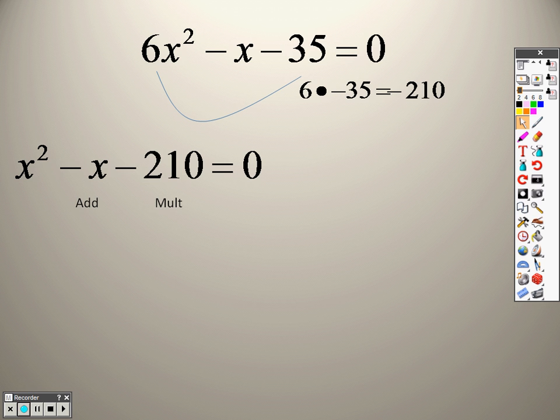What multiplies to give you negative 210 that adds to give you negative 1? Now, I get it. That's a big number, right? So, when we set up our triangle here, what multiplies to give you negative 210 that adds to give you negative 1? Well, very simply put, you have to sit there and think about it. When we do this, I figure out that we end up getting negative 15 and positive 14. Negative 15 times 14 is negative 210. Negative 15 plus 14 is negative 1.